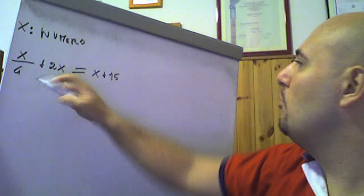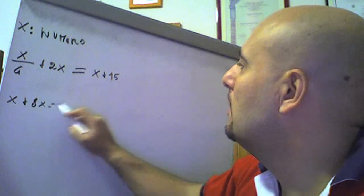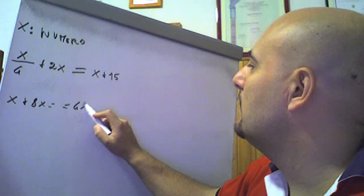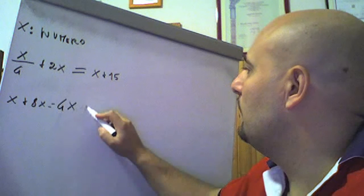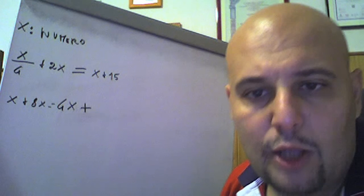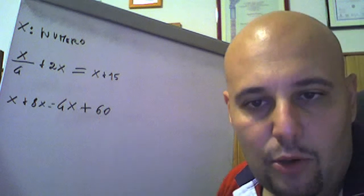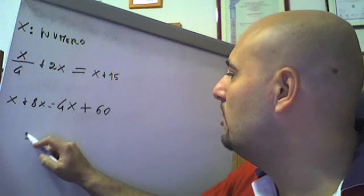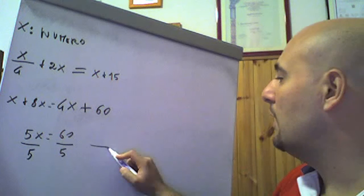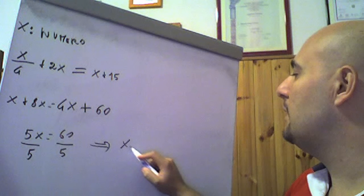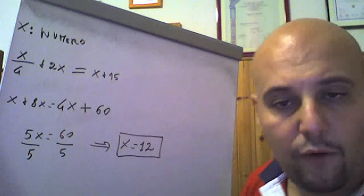Minimo comune multiplo è 4. 4 diviso 4, 1 per x è x; 4 diviso 1, 4 per 2x è 8x; uguale a 4x + 60. Trasportiamo il 4x a sinistra, diventa -4x. 8x + x è 9x, meno 4x è 5x uguale a 60. Dividiamo ambo i membri per 5, per il secondo principio di equivalenza delle equazioni, ottenendo che x = 12. Il numero richiesto è 12.